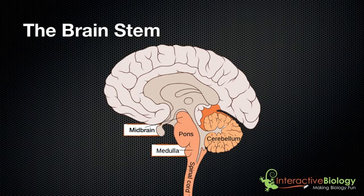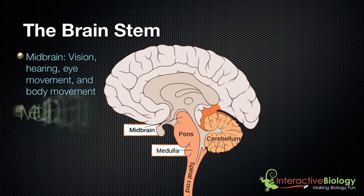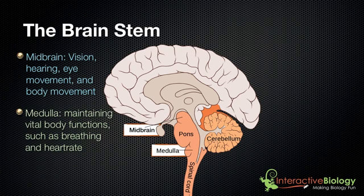Now let's look at the functions of those three parts. First, we have the midbrain, and that's involved in processes such as vision, hearing, eye movement, and body movement. Then we have the medulla, and that is involved in maintaining vital body functions such as breathing and heart rate.